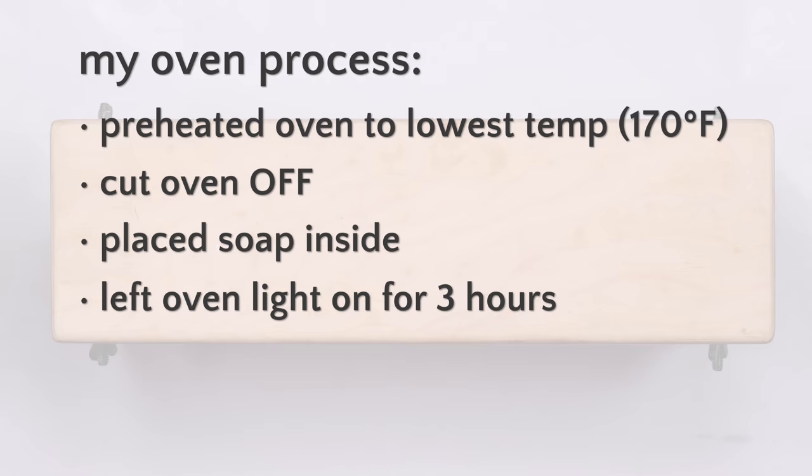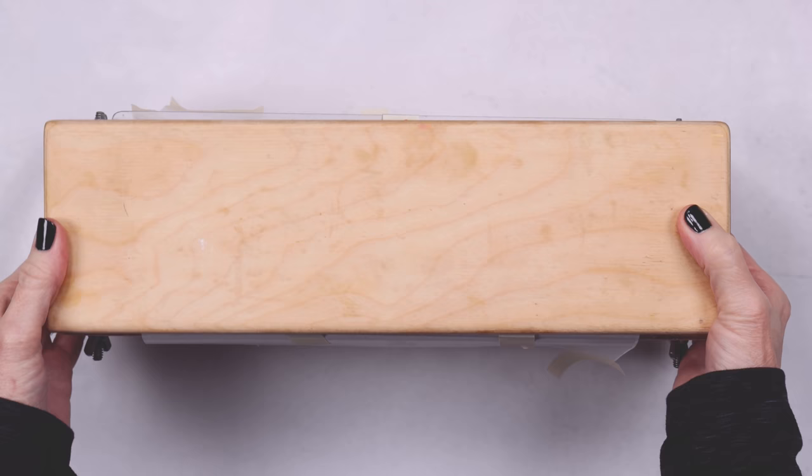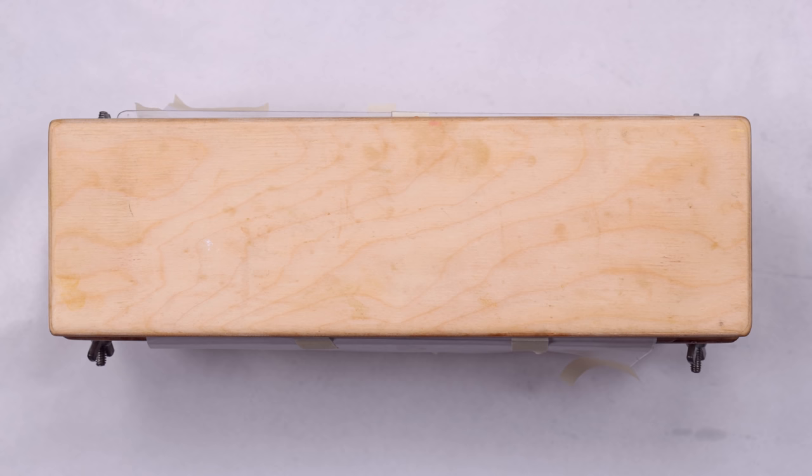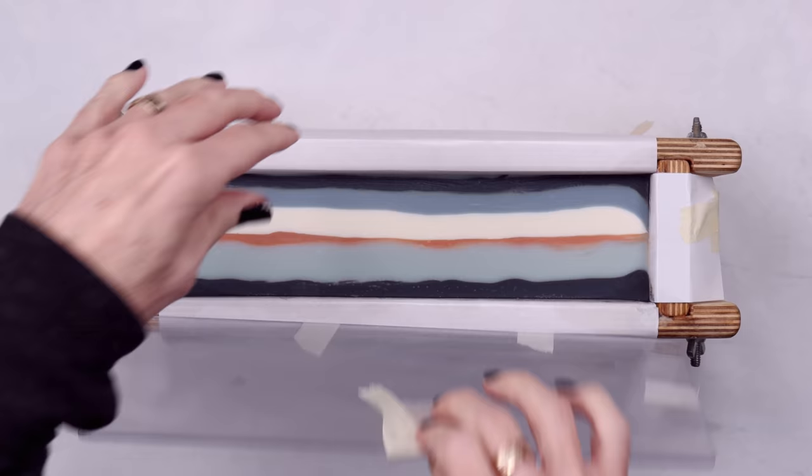I removed the soap at a lower temperature, so I wasn't too worried about glycerin rivers forming. If you do soap at warmer temperatures or use a higher water amount, you could possibly skip the oven process and still achieve gel. It's really something you have to experiment with to know what works in your environment and with your particular recipe. I removed the soap 48 hours later, then waited another 24 hours to unmold and cut it.